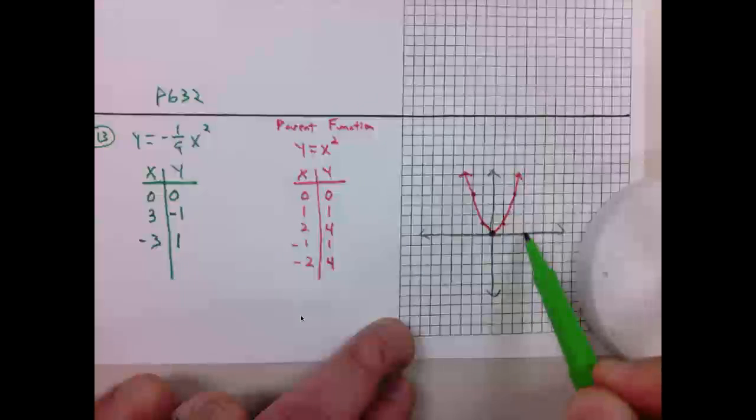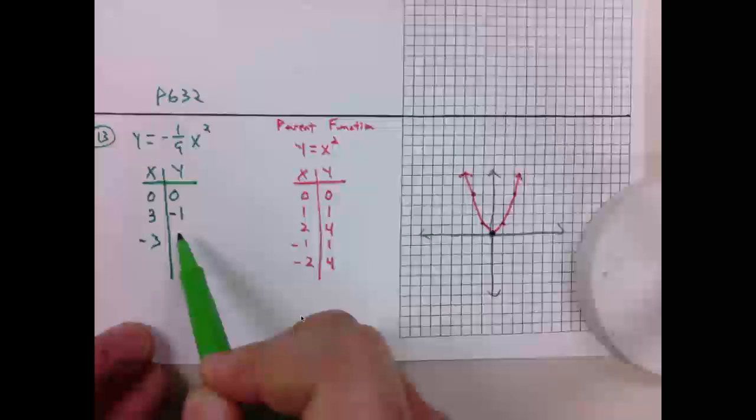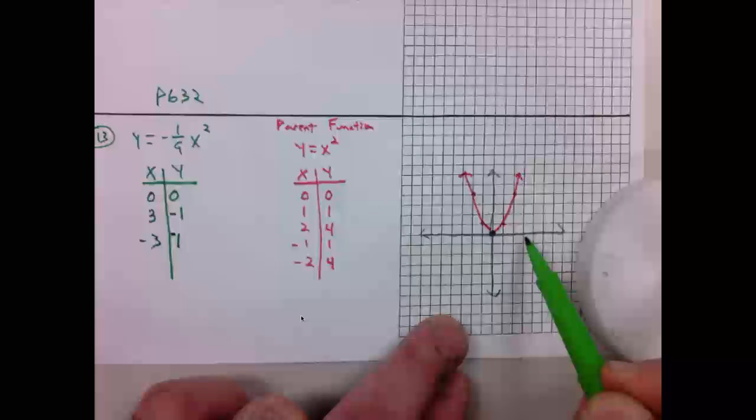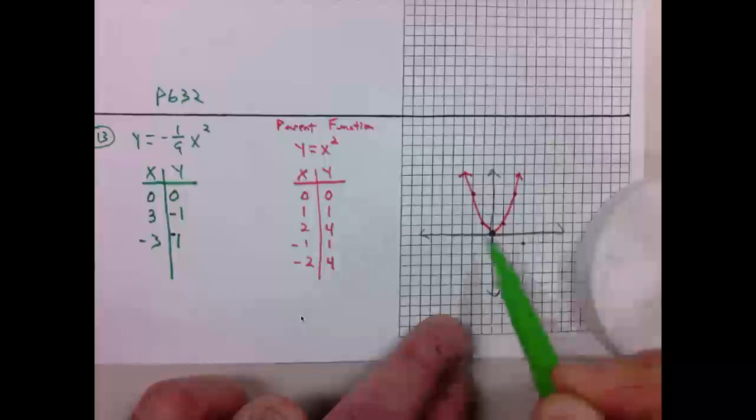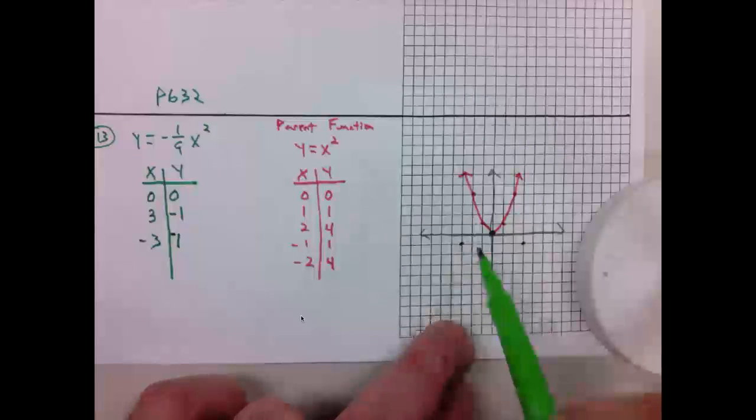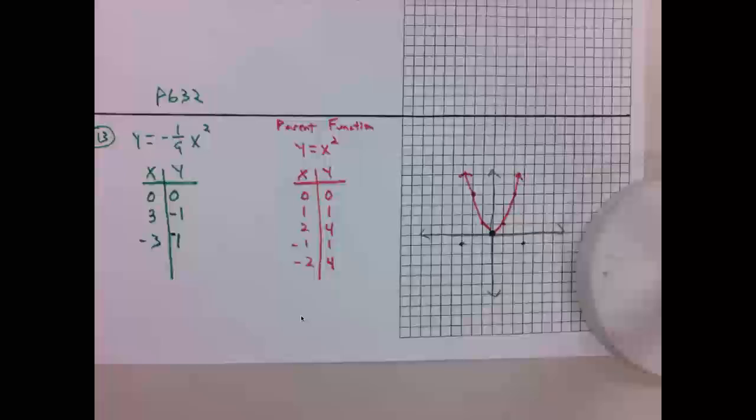Pardon me. Negative 3 will pair with negative 1. So negative 3, negative 1. All right. I'm going to find one more point.